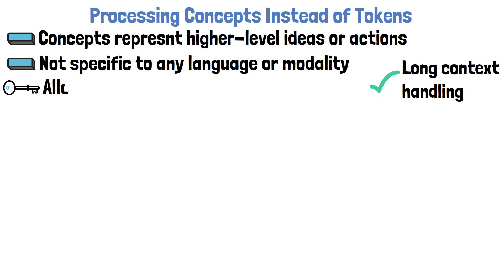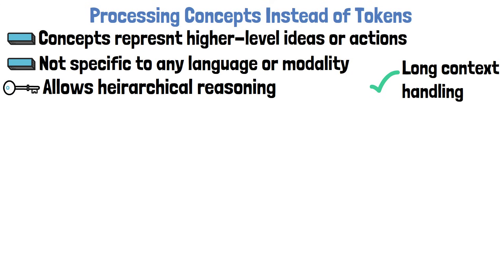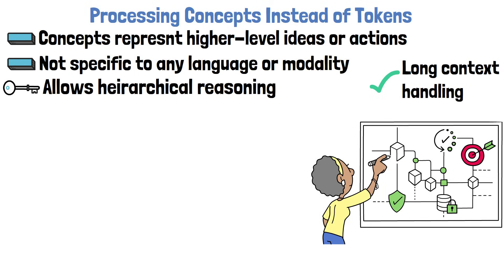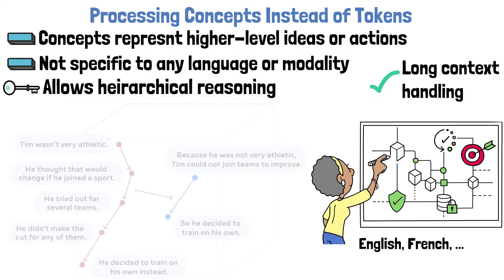A key observation is that processing concepts rather than subword tokens allows better hierarchical reasoning. An example from the paper illustrates this: imagine a researcher giving a 15-minute talk. The researcher typically wouldn't prepare a detailed speech by writing out every single word; instead, they would outline a flow of higher-level ideas. Should the researcher give the same talk multiple times, the actual words spoken may differ — the talk could even be given in different languages — but the flow of higher-level abstract ideas will remain the same. Working in the concept space supports such hierarchical reasoning.